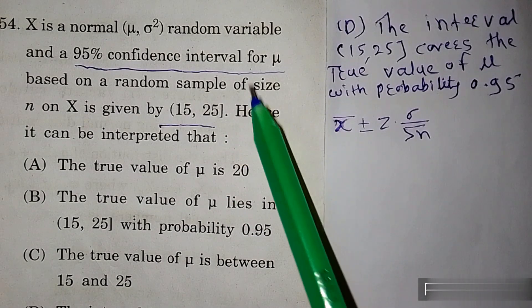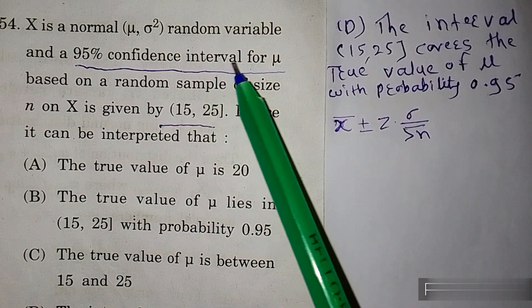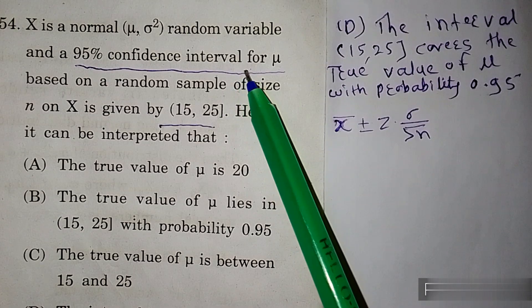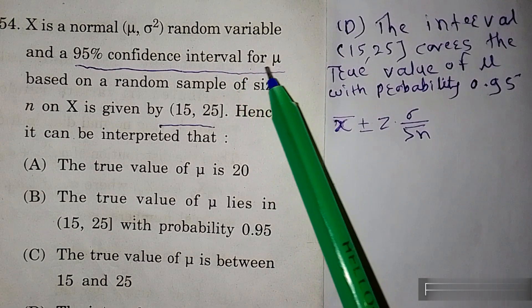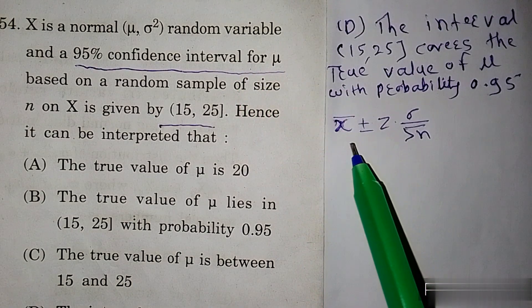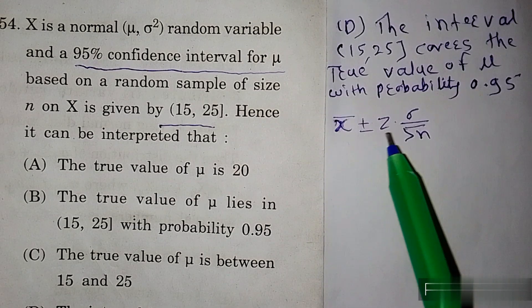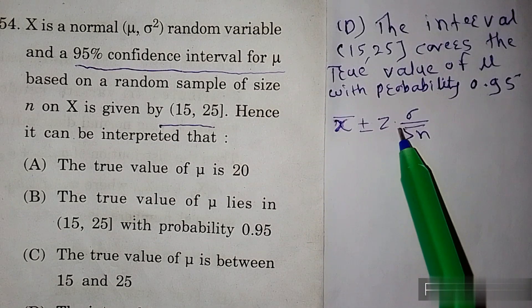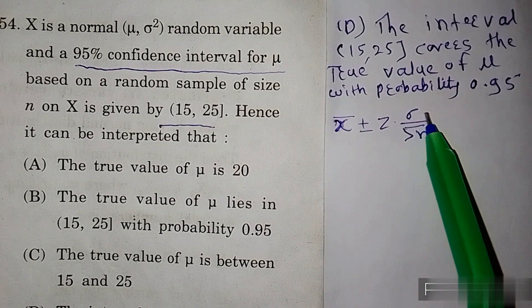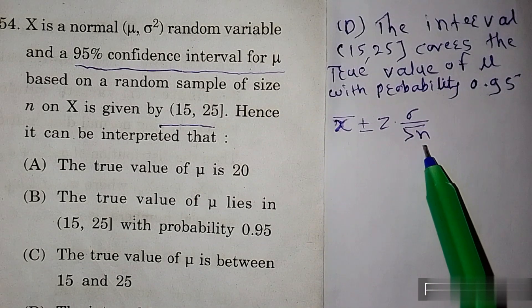Simple है कि आपको 95% confidence interval for mu को find करना है, तो आप यह formula लिख लो: X̄ ± Z × (standard deviation / √n).